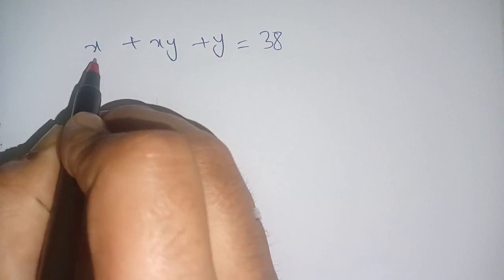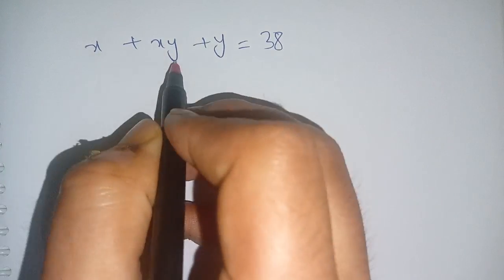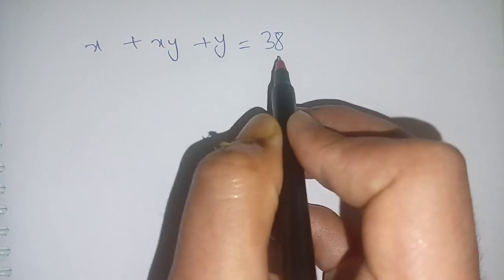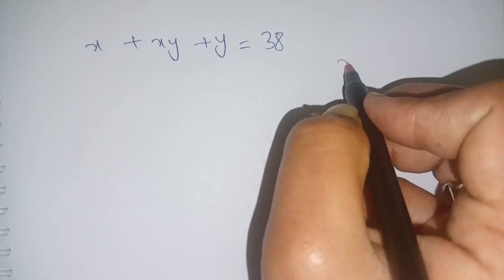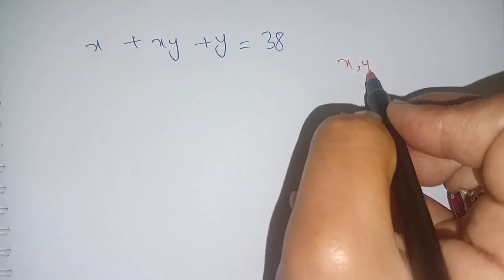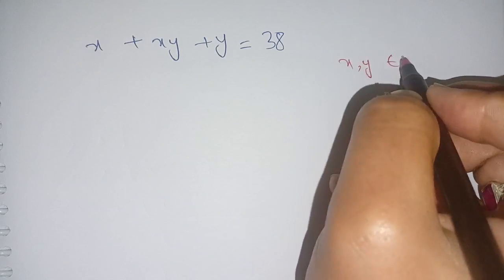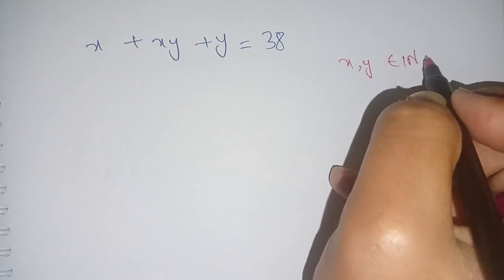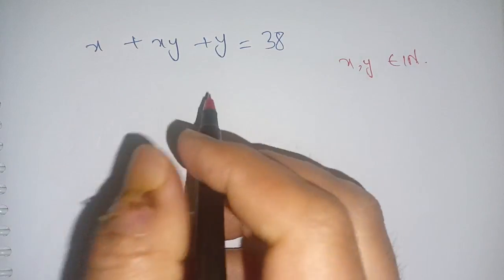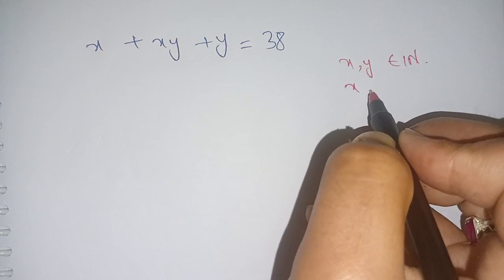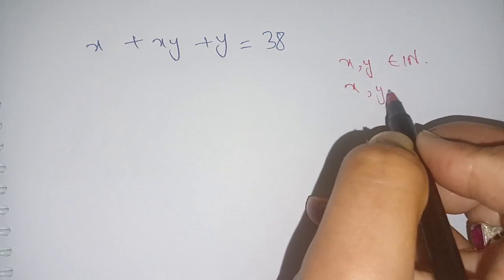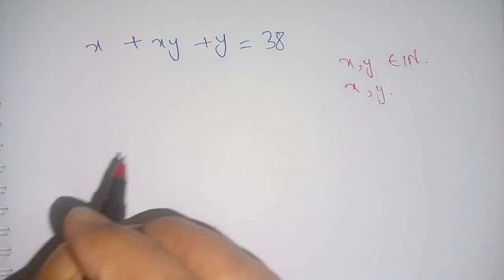Hello everyone. How to solve x plus xy plus y is equal to 38, where x and y belong to natural numbers. We have to find the value of x as well as the value of y.